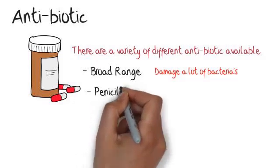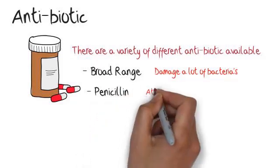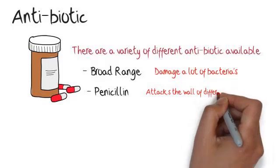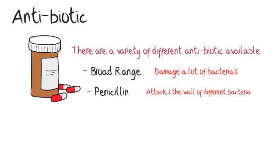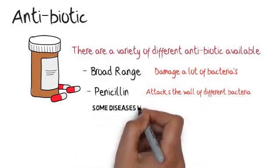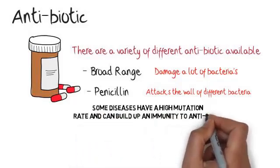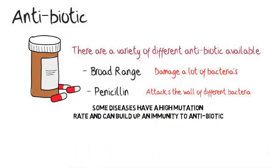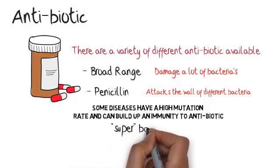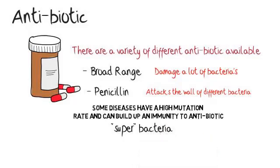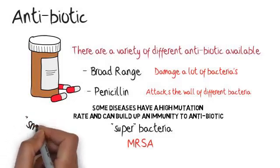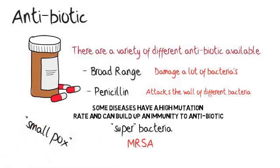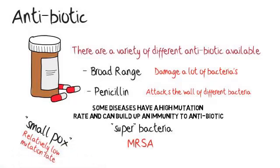Penicillin is one of the most commonly used antibiotics. It attacks the wall of different bacteria, resulting in them breaking apart. Another downside to some antibiotics is that some diseases have a high mutation rate and can build up an immunity to the antibiotic — these are known as super bacteria. MRSA is a prime example of super bacteria. The reason that diseases such as smallpox have been eradicated is that they had a relatively low mutation rate, and by utilising antibiotics we were able to get rid of them fairly quickly.